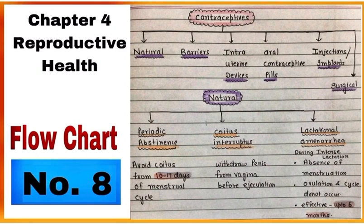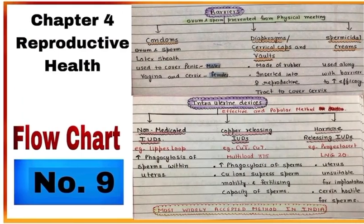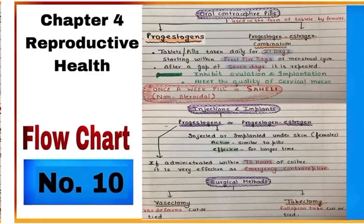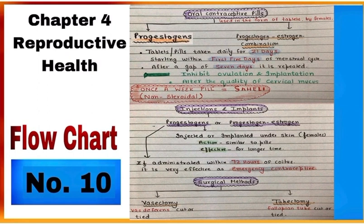Flowchart number eight is about contraceptives — first natural methods, next barriers and intrauterine devices, oral contraceptive pills, injections and implants, and surgical methods of contraception.